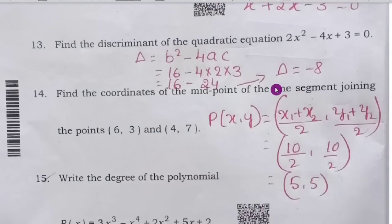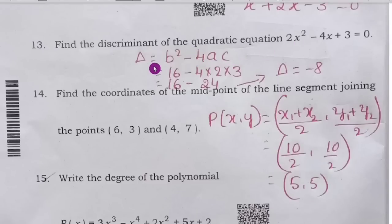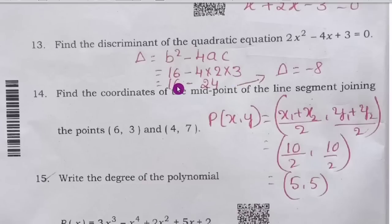Thirteenth question: find the discriminant of the quadratic equation 2x² − 4x + 3 = 0. Discriminant Δ = b² − 4ac = 16 − 4 × 2 × 3 = 16 − 24. Therefore, Δ = −8.